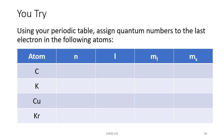Using the periodic table, assign quantum numbers to the last electron in the following atoms. When we say 'last electron,' we mean the final electron added to make the atom. For carbon (Z=6), which is in the p block: l = 1, n = 2 (period 2), m_l = 0 (second column of p block), and m_s = +½ (first three columns have spin +½).